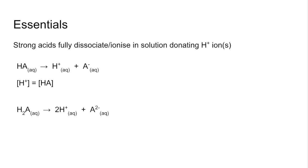Dibasic acids — something like sulfuric acid, H2SO4 — can be represented as shown, and so the H+ concentration will be twice that of the acid.